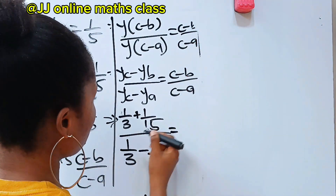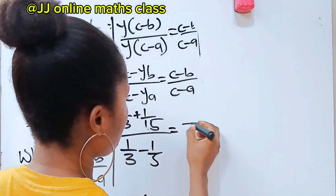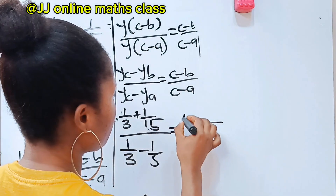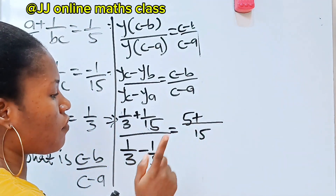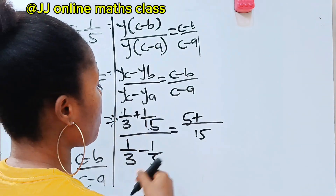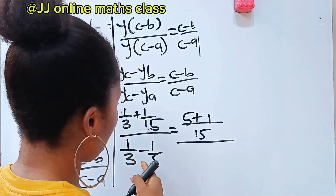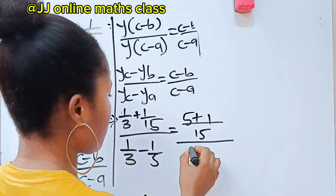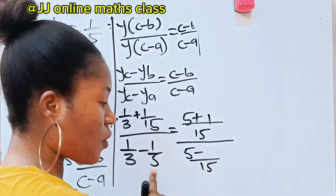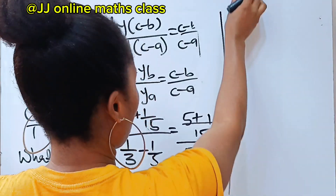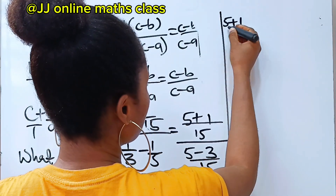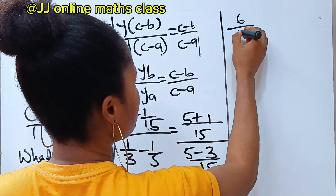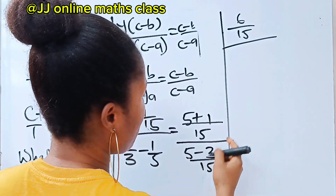Now let's solve this. The LCM is 15. 15 divided by 3 gives us 5; 5 times 1 is 5. Plus 15 divided by 15 gives 1; 1 times 1 is 1. Divided by: the LCM is also 15. 15 divided by 3 is 5; 5 times 1 is 5. Minus 15 divided by 5 is 3; 3 times 1 is 3. So we have 6 over 15 divided by 2 over 15.